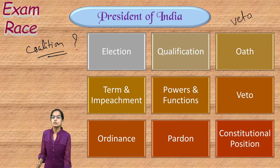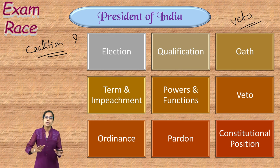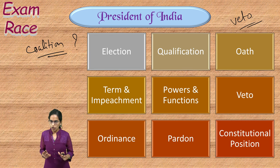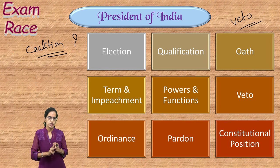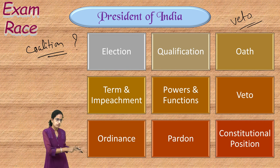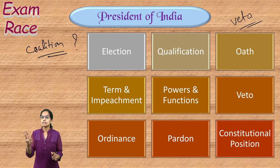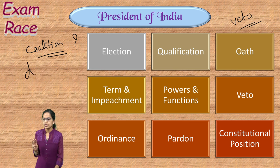The second place where the president uses discretionary power is the veto power — the power to hold, withhold, or refuse any bill sent to become a law. Third, the president has the right to send advice to the council of ministers to reconsider their decisions. These are the three key areas of presidential discretionary power.